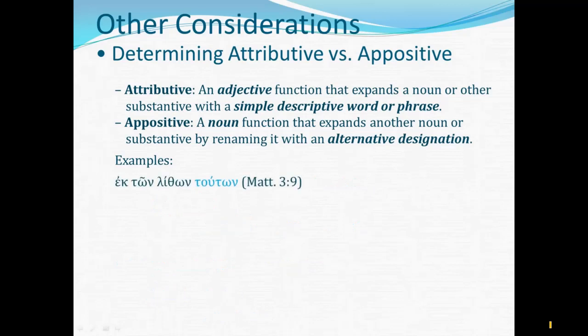Matthew 3.9 is where John the Baptist says God is able to raise up children for Abraham from these stones. It would be very awkward to set off toutōn with a comma: 'from the stones, these.' Much better to just say 'from these stones.' So certainly this is an attributive — a demonstrative pronoun functioning as a simple attributive modifier for lithōn. Notice this is not a standard attributive construction: you have article–noun, but toutōn follows without the repeated article. That's because demonstrative pronouns do not follow the normal attributive pattern; they will typically be written without an article where an adjective would require one.